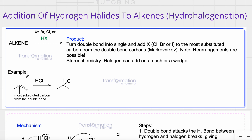Let's take a look. I have this alkene — I see a C double bond C — reacting with HCl. I turn my double bond into a single bond, then look at the two carbons that had the double bond. The carbon on the left is attached to three carbons — it's tertiary. The carbon on the right is attached to one carbon only — it's primary. I add my chlorine to the most substituted carbon, so it goes to the left carbon.